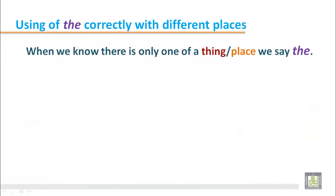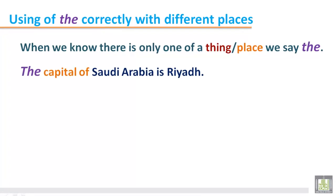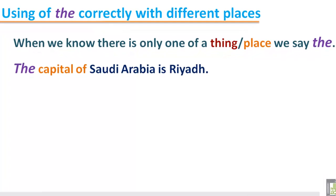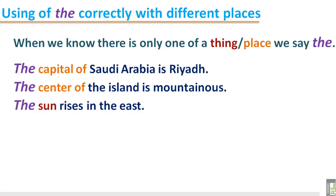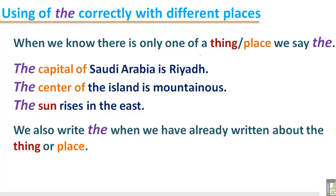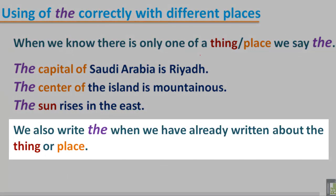Using 'the' correctly with different places. When we know there is only one of a thing or a place, we say 'the'. For example: 'The capital of Saudi Arabia is Riyadh' — the capital is only one. 'The center of the island is mountainous' — in the island there is only one center. 'The sun rises in the east' — the sun is only one, so we put 'the' before it.